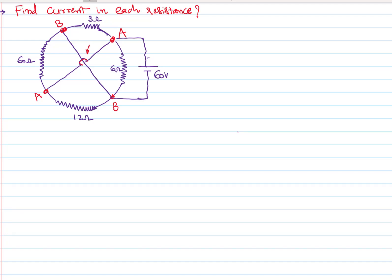Look at each resistor. This 6 ohms is between the points A and B. 3 ohms is between the points A and B. 60 ohms is between the points A and B. Even this 12 ohms is also between the points A and B. So if you draw an equivalent circuit to this, you can say...